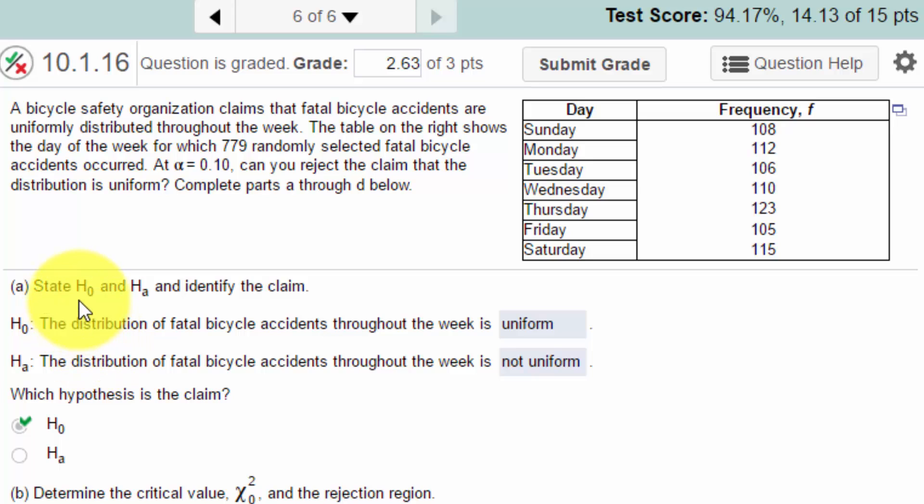And again, let's go over the null and the alternative because that is important for people to get those right. For goodness of fit, the null is always that yes, the distribution that we observe is the same as that we expect, in this case it's uniform. And the alternative is that the distribution is not the same as we expect, in this case not uniform.